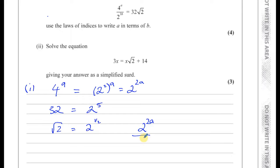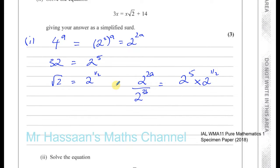And that's divided by 2 to the power of 3b equals, and you've got 2 to the power of 5, which is 32, times 2 to the power of 1 half. So now we can use the laws of indices in terms of how to simplify this.